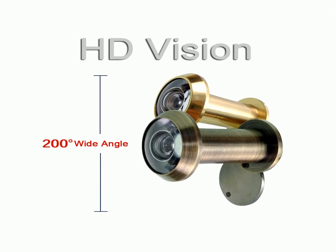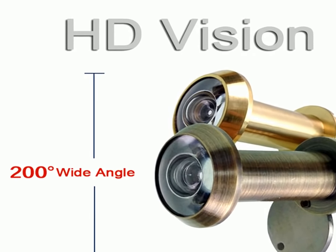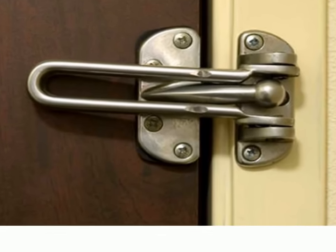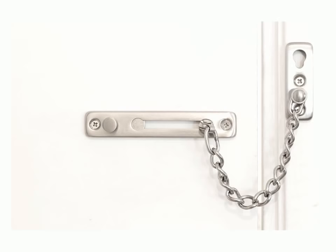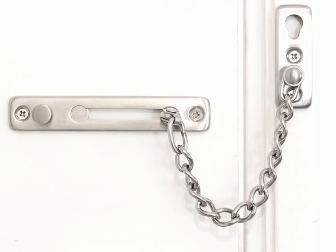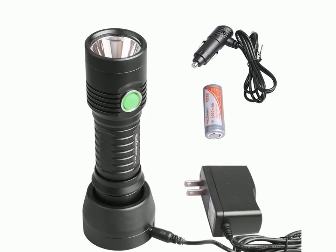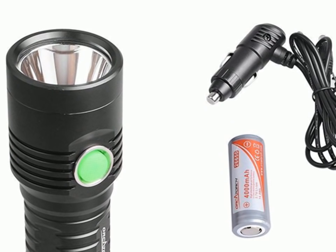Magic eye: fixed in doors to see who is on the other side of the door. Secure door locks. Door chains for safety. Night torch with rechargeable battery for emergencies like power outage, blackout, and fire evacuation, etc.